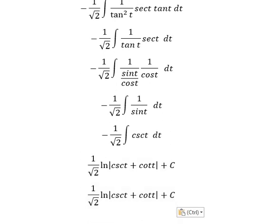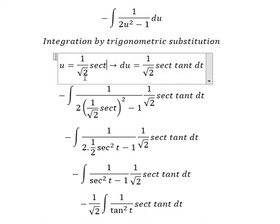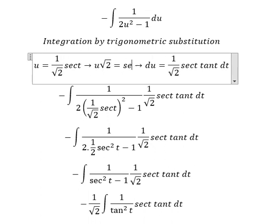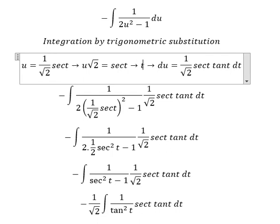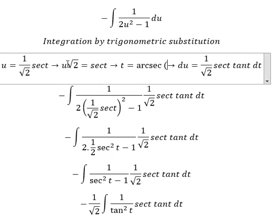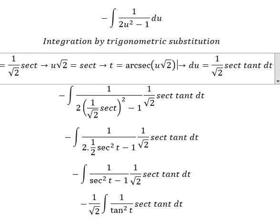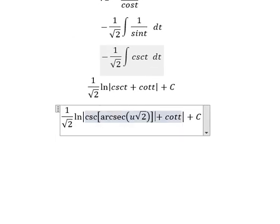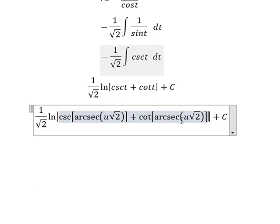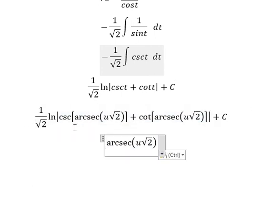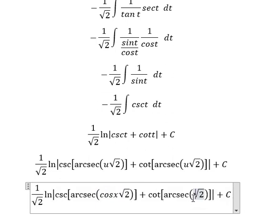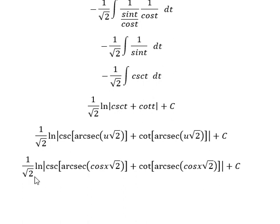About t, we need to go back, so we multiply both sides by the square root of two. Now we can find t equals to arc secant of this expression. So we put this in to replace t. For u, that is cosine x. And this is the final answer.